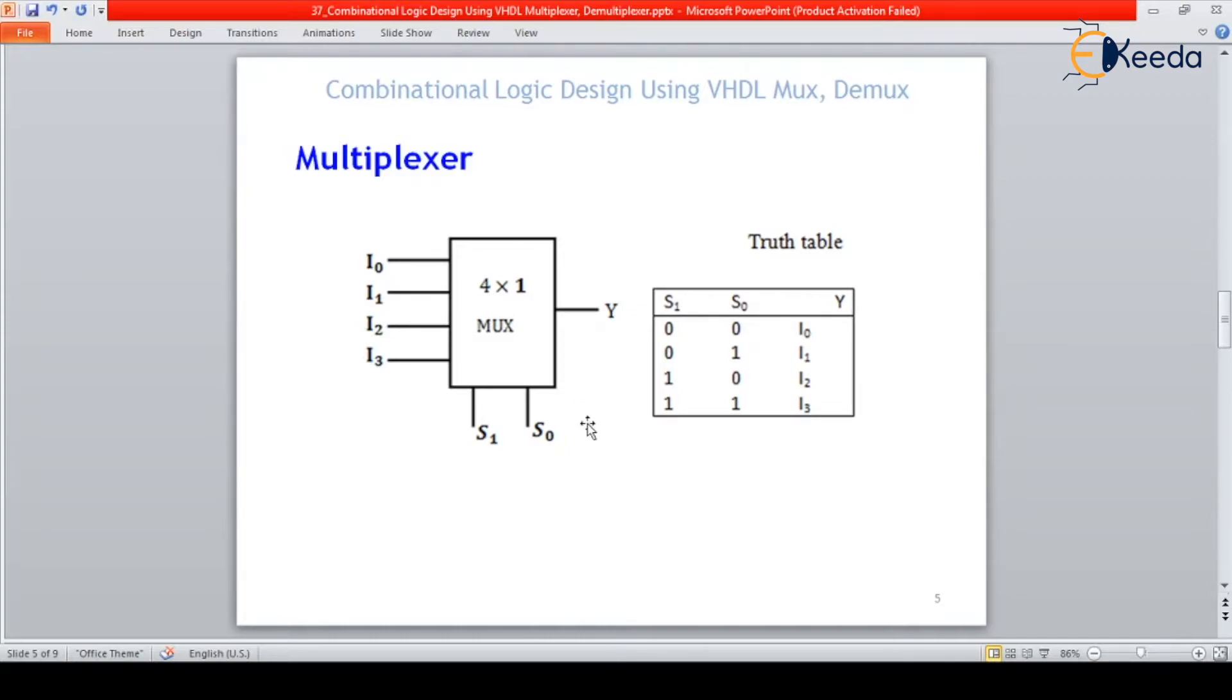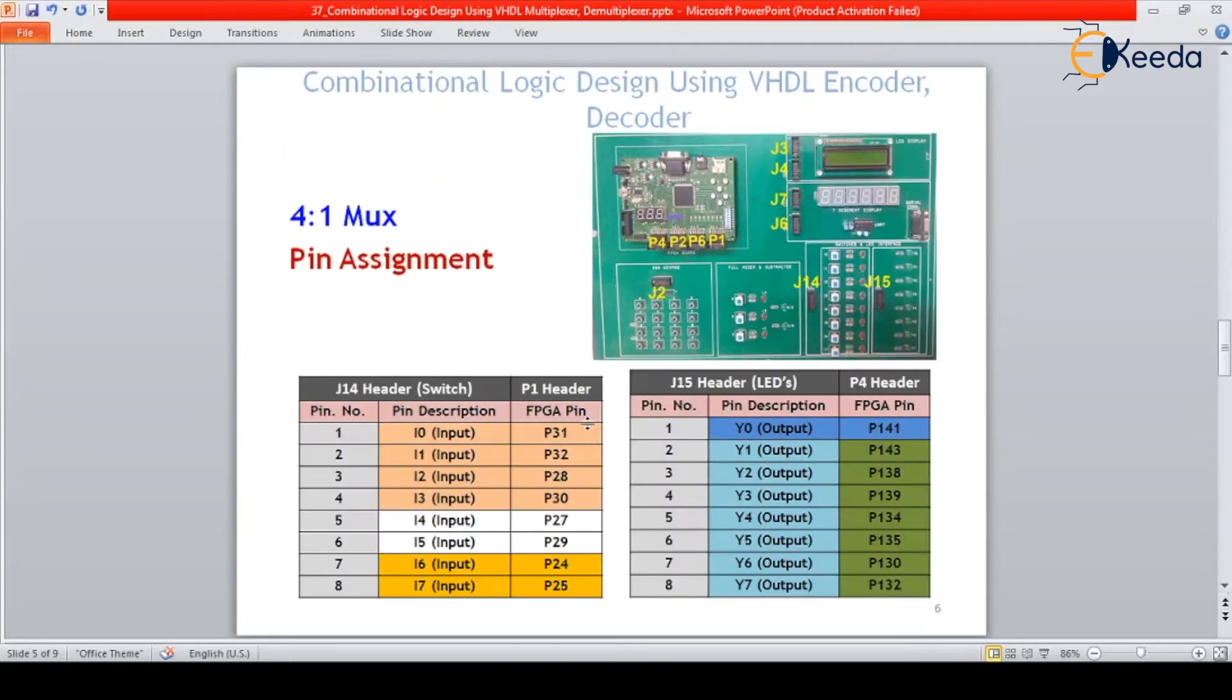So let us start writing a VHDL code for the multiplexer. This pin assignment will come later on. Let us first complete the VHDL code, simulate it, synthesize it, and then we will come back to this pin assignment.